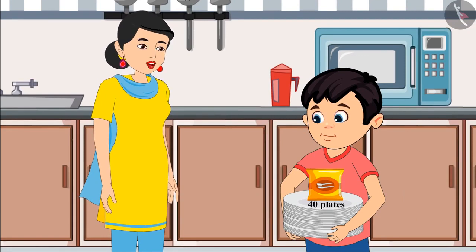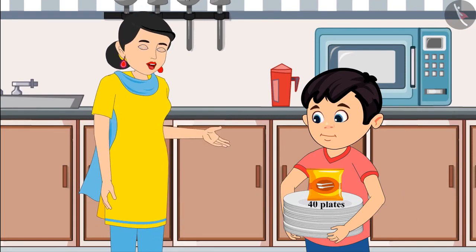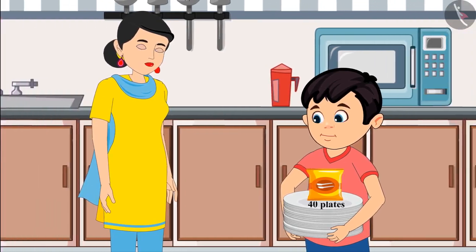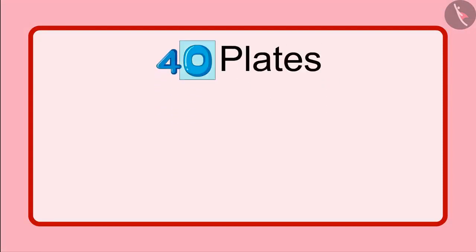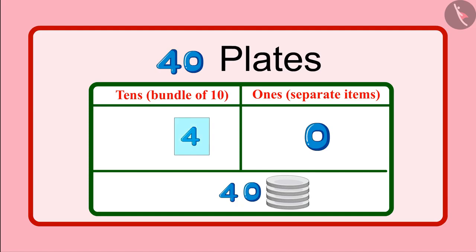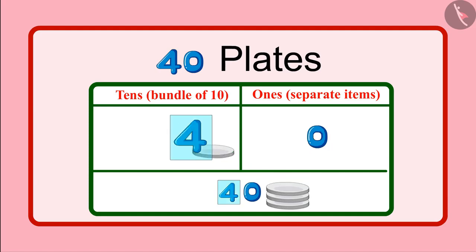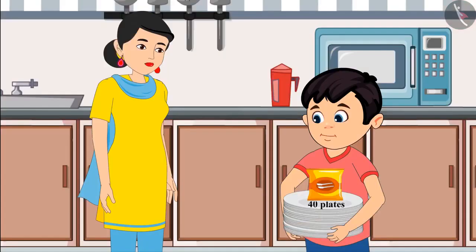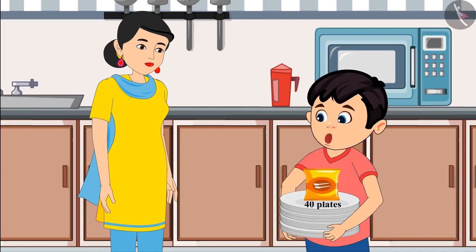No, no, Chotu, you are reading it wrong. It's written here 40 plates, which is 4 groups of 10 plates. But mummy, even 0 is written here, what about it? Chotu, here 0 is written in place of unit, which means not a single open plate. And instead of 10, it is written 4, which means 4 groups of 10 plates, meaning 40 plates. So a total of 40 plates are there in this packet. Okay, now I have understood, mummy.